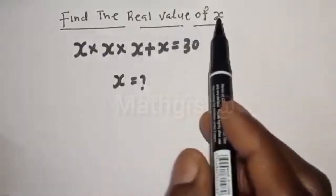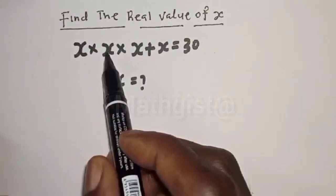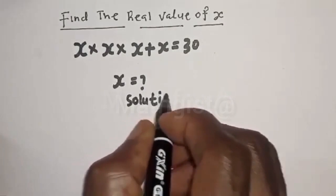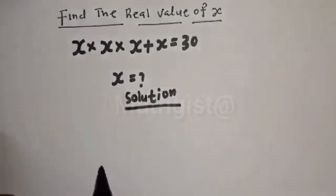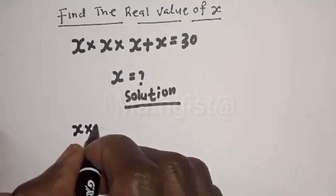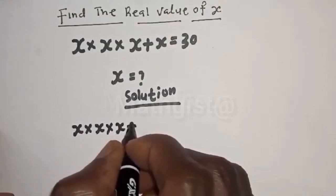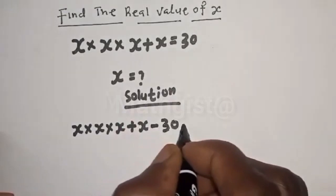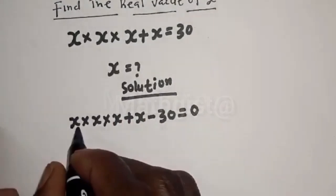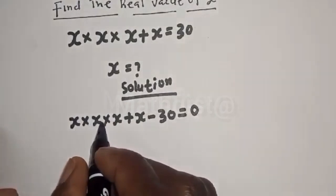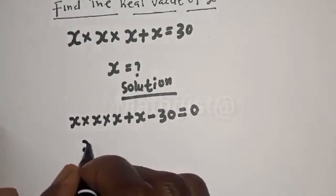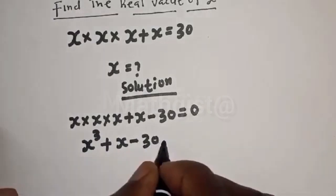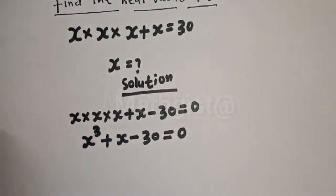Find the real value of s: s times s times s plus s is equal to 30. We have s multiplied by s multiplied by s plus s. Bringing 30 to this side, it becomes minus 30 is equal to 0. s multiplied by s multiplied by s is s raised to power 3, so s³ + s − 30 = 0.